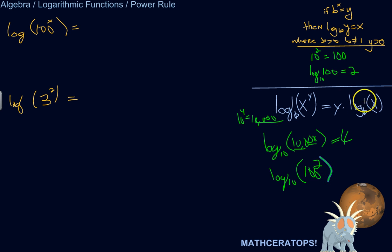This rule is saying that this is equivalent to saying 2 times log base 10 of 100. Well, what's log base 10 of 100? That's 2, right? I have to raise 10 to the power of 2 to get 100. So 2 times 2 is 4.